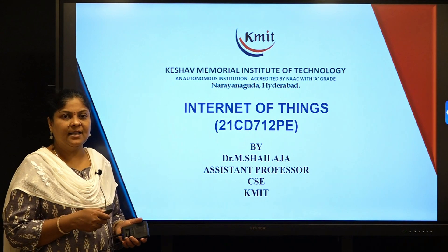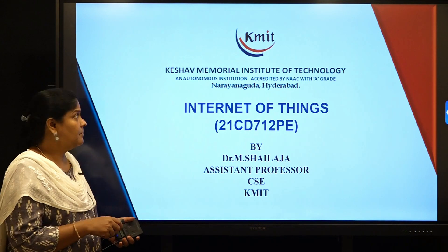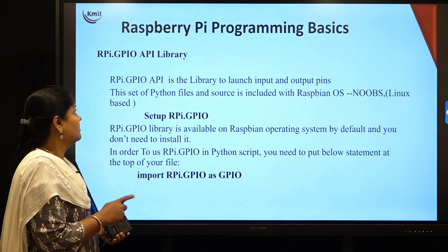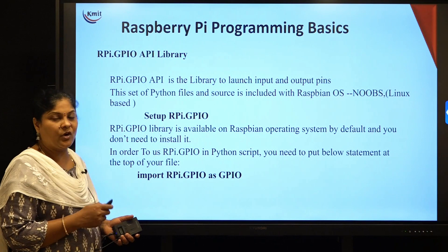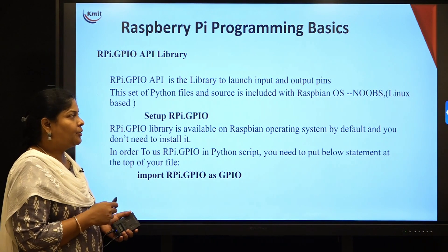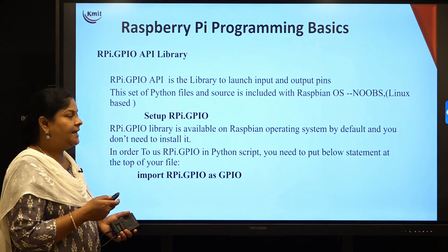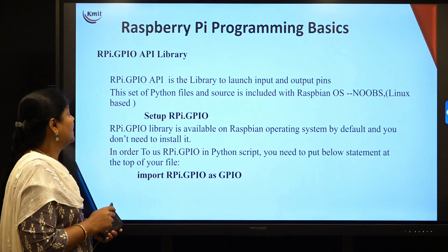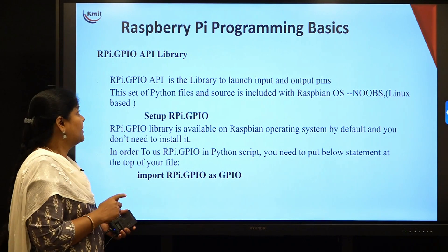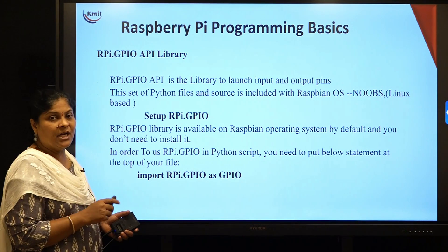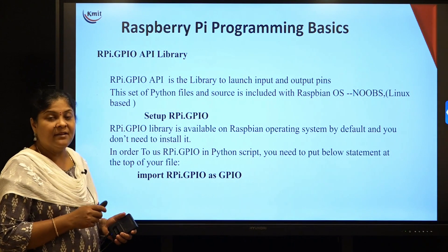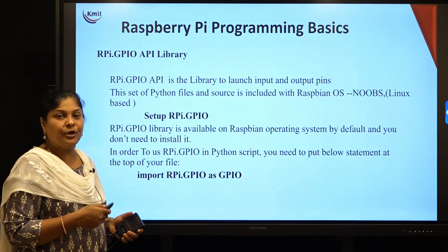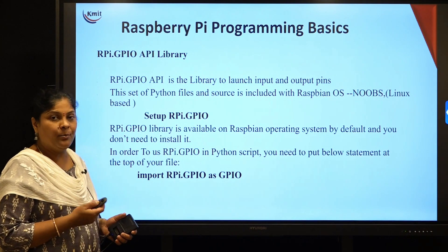This session will cover Raspberry Pi Programming Basics — the different libraries and methods used for writing programs. The basic library is rpi.gpio. GPIO stands for General Purpose Input Output. Raspberry Pi consists of 40 GPIO pins, and using those pins we are going to implement different programs.